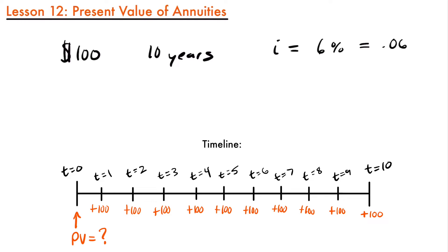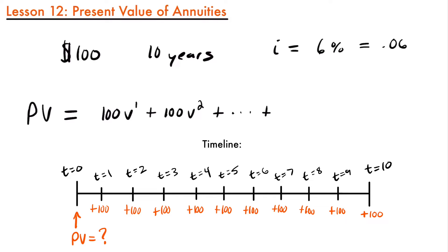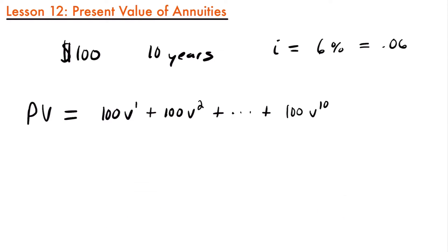Using our currently known methods, the present value equals that first withdrawal of $100 times v, our present value factor for one year, plus another $100 times v squared for two years in the future, continuing all the way up to 100 times v to the tenth power for the last payment. We would also include all payments from year three to year nine in between. We could certainly find the present value this way, but that's a lot of work — quite time consuming. There's actually an easier way.